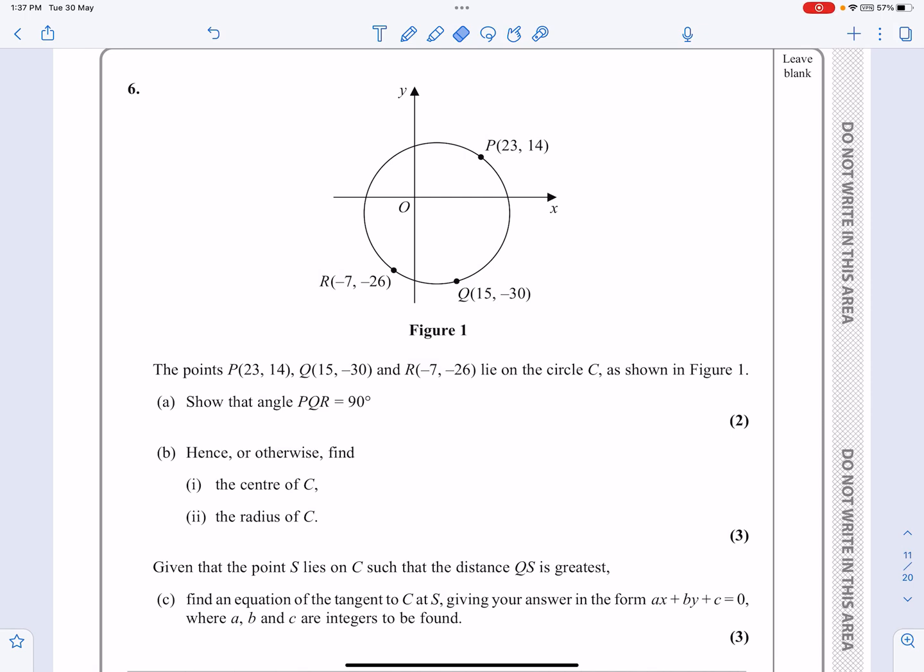Okay, this is January 2022 P2 paper, question 6. If we look at it, we can see that this is a coordinate geometry question involving circles. It looks like there's something to do with tangents in there as well. Let's go ahead and make a start and see what we need to do.